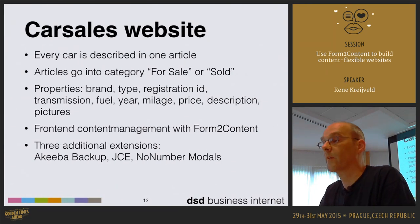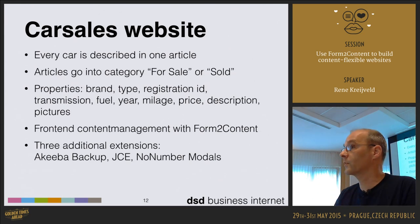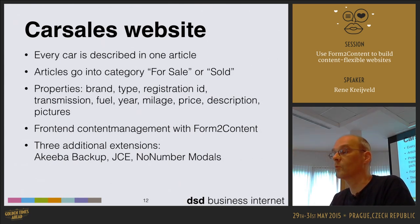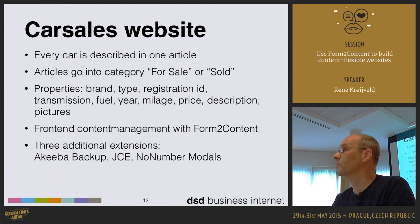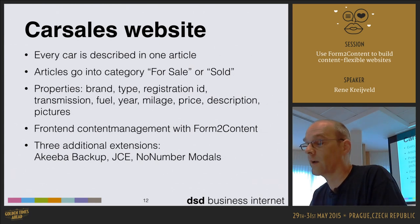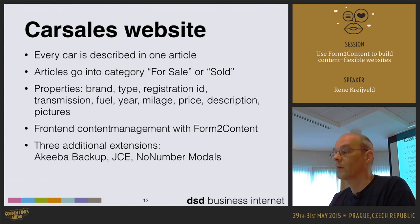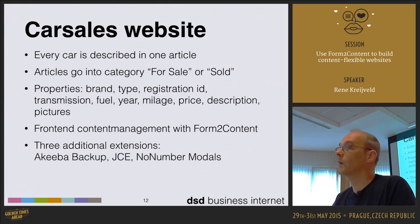Now about our car sales website. I want to describe every car within one single article and store these articles in either the for-sale category or the sold category, so I can display cars for sale and cars that have been sold. The main properties I want to register are brand, type, registration ID, transmission, fuel, year, mileage, price, description, and pictures — all managed through front-end content management with Form2Content. I've set up a demo site with only three additional extensions: Akeeba Backup, JCE as the front-end editor, and the No-Number Modals plugin for lightbox pop-ups. The rest is core Joomla with Form2Content.